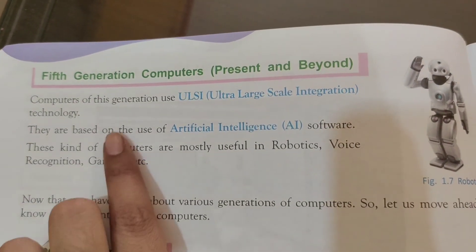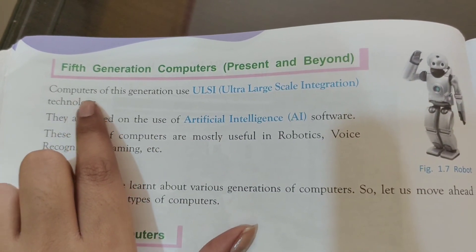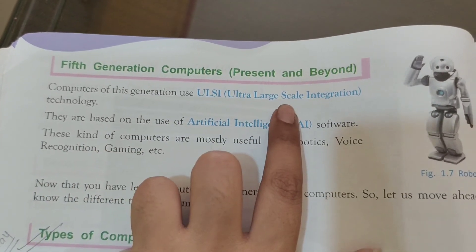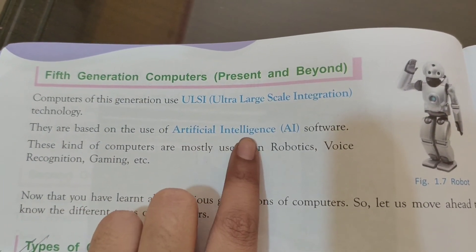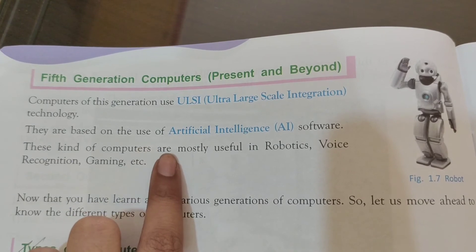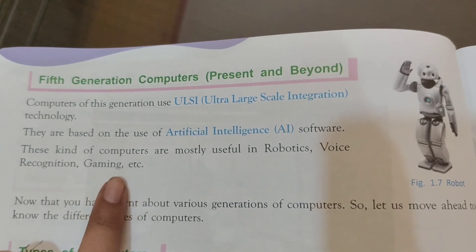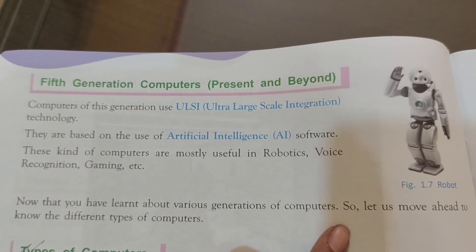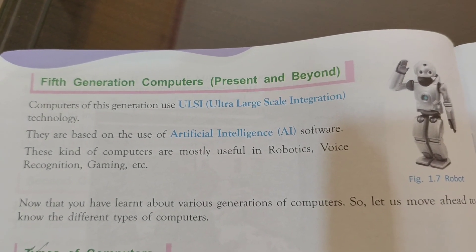Lastly, come the fifth generation computers, which is present and beyond. Computers of this generation use ULSI — ultra-large scale integration technology. They are based on the use of artificial intelligence, AI, software. These kinds of computers are mostly useful in robotics, voice recognition, gaming, etc. Now that you have learnt about various generations of computers, in the next part of our video we will be studying about the types of computers. Thank you.